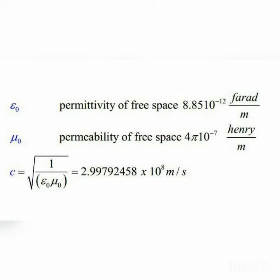Permeability of free space is defined as the resistance of a material against the formation of a magnetic field, or we can say the ability of a material to allow magnetic lines to conduct through it.